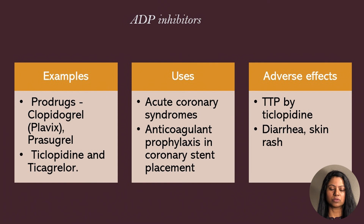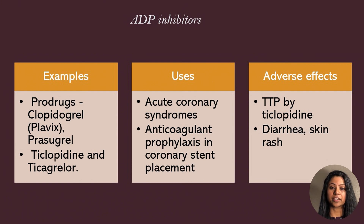ADP inhibitors include clopidogrel (Plavix), prasugrel, ticagrelor, and ticlopidine. Both clopidogrel and prasugrel are pro-drugs which need to be activated by the cytochrome P450 system in the liver. They are given as adjuncts to aspirin in patients undergoing percutaneous coronary intervention or angioplasty with stent placement.